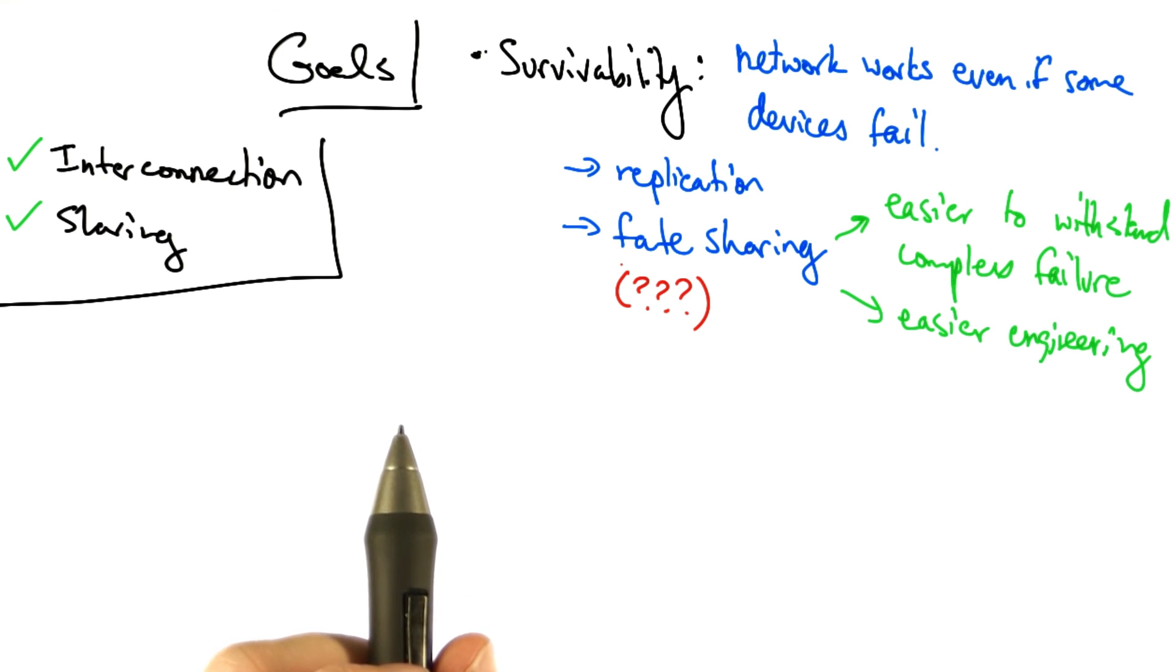There are other examples where the current internet's design violates fate sharing, and it's worth thinking about those.